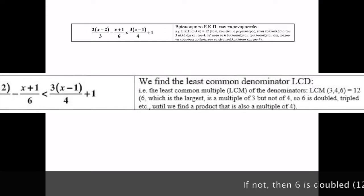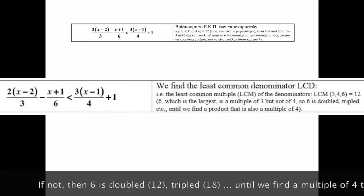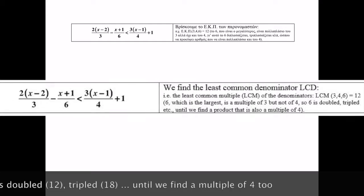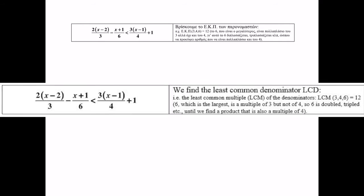Then we try the next multiple of 6, 2 times 6, 3 times 6, etc., until we get the first multiple of 6 that can be divided by 4. Here, 2 times 6 equals 12, is a multiple of 3 and 4, so it is the LCD.